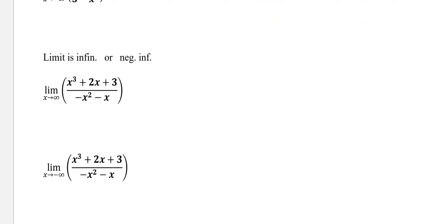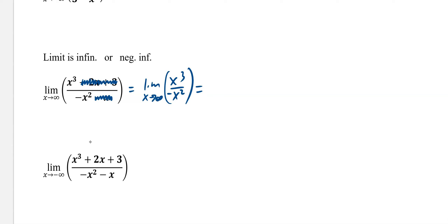The last case is for limits as infinity or negative infinity when the top degree is bigger. If the top is bigger, then all you have to do is think about the leading terms. This will be the limit as x cubed is divided by x squared — negative — as x approaches infinity. If we simplify, you get the limit as x approaches infinity of negative x. When you plug infinity in, you get negative infinity.